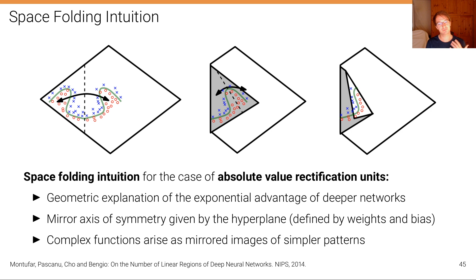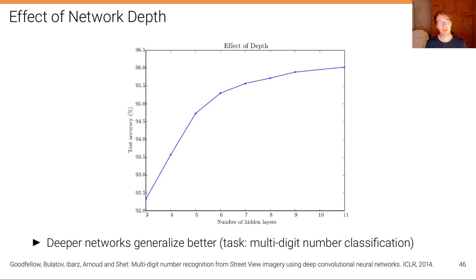So complex functions arise in this case as mirrored images of simpler patterns, and there's similar intuitions for other activation functions. So here are some empirical results finally.